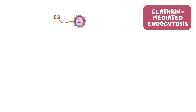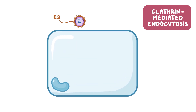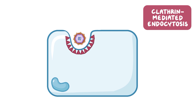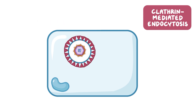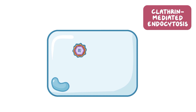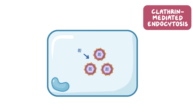West Nile virus enters host cells through a lipid membrane protein called E2, in a process called clathrin-mediated endocytosis. Clathrin-mediated endocytosis is a cellular process that creates a vesicle to internalize a certain substance — in this case, the virus — with the help of proteins called clathrins. The virus's membrane will then fuse with the host cell's membrane, releasing its RNA genome into the cytoplasm of the host cell. The replication of the virus then takes place, before exiting the host cell by outward budding of the host plasma membrane.